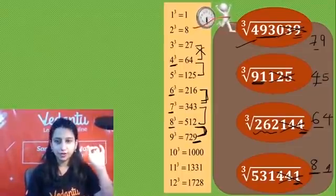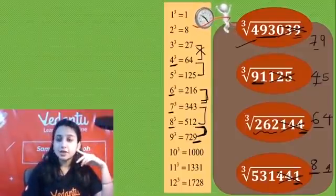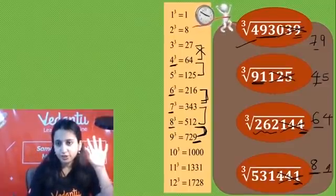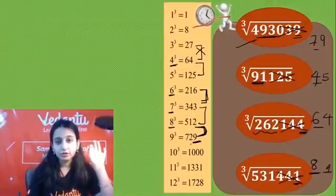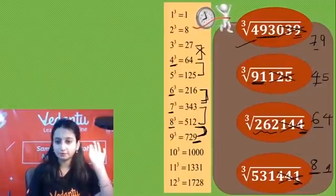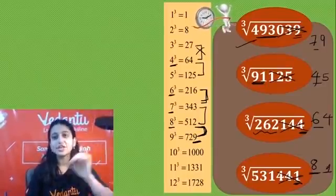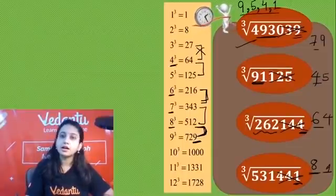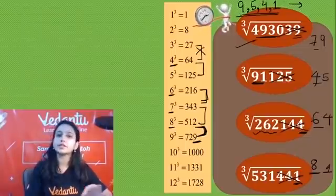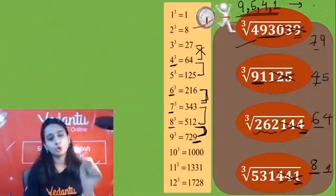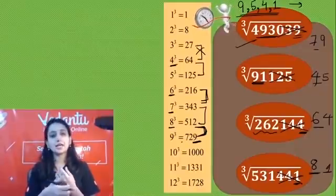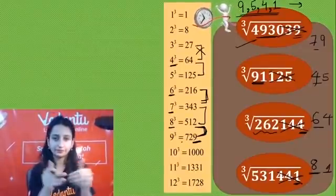Did you observe something? When the ones place has 9, the answer's ones place is also 9. If it's 5, the answer's ones place is also 5. If 4, then 4. If 1, then 1. So for these four digits — 9, 5, 4, 1 — the ones digit stays the same in the cube root. You don't even need to check the table for these! Clear hai?